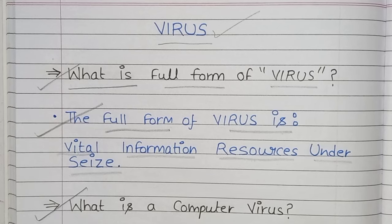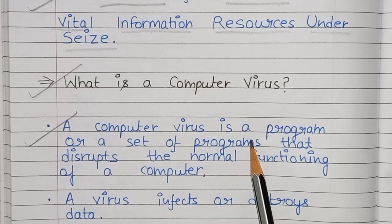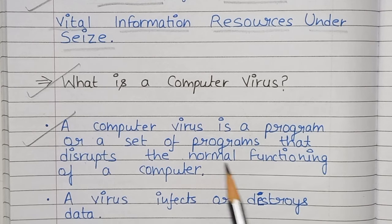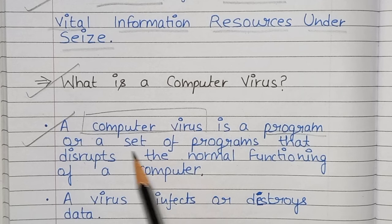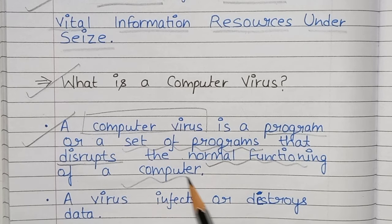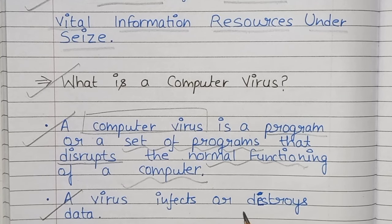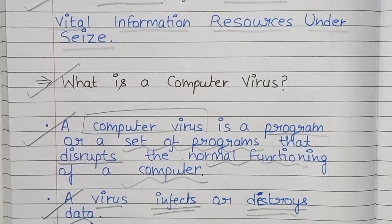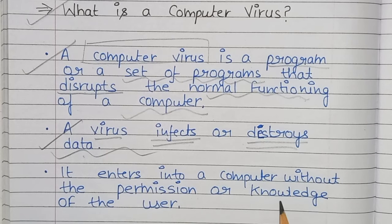Next, what is a computer virus? A computer virus is a program or set of programs that disturbs the normal functioning of a computer. A virus infects or destroys data. It enters into a computer without the permission or knowledge of the user.